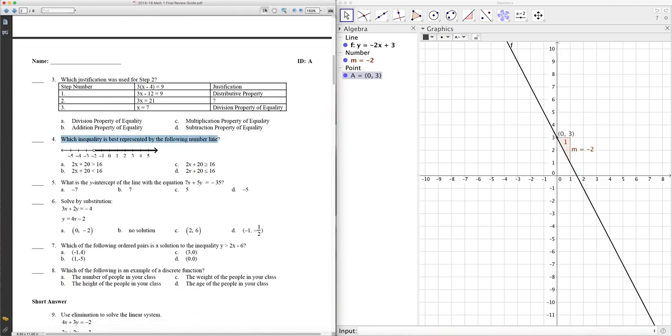It says, which inequality is best represented by the following number line? So my number line shows the number line going from negative 2 to the right, which means all of these values are greater than negative 2. The point is open, it just means that negative 2 is not part of the solution. So A, B, C, and D are inequalities. Which of those inequalities is the graph given on that number line? So will GeoGebra do this? I think it can.